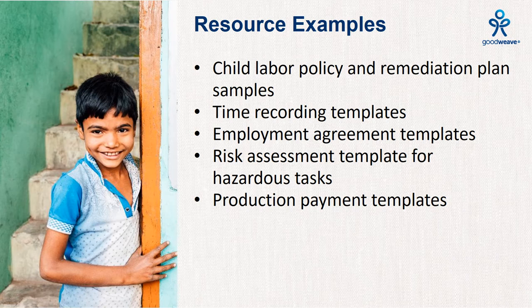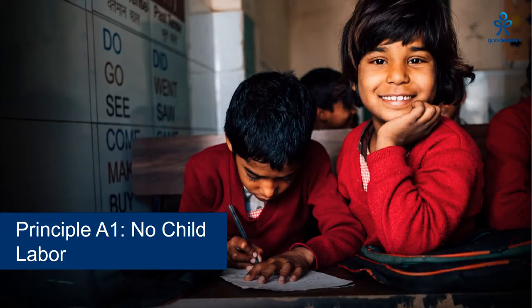Principle A1 ensures that the producer does not engage in or support the use of child labor, and it also covers restrictions on young workers. There have been no substantive changes in Principle A1 in the new standard. The five criteria under A1 require the producer to provide public notices that they do not allow child labor, verify the age of workers, have processes for remediation if child labor is found, clearly prohibit hazardous work for young workers, keep records of young workers, and ensure school-aged children are not working during school hours.